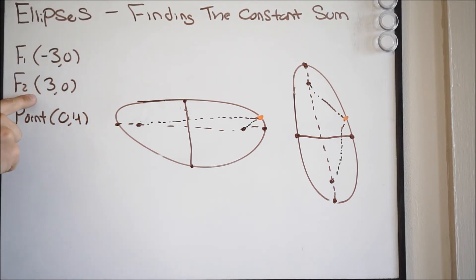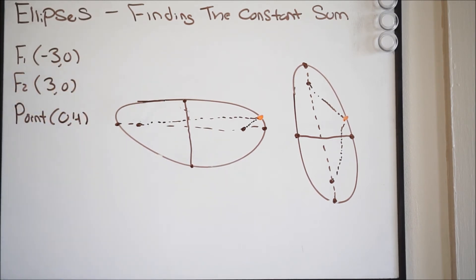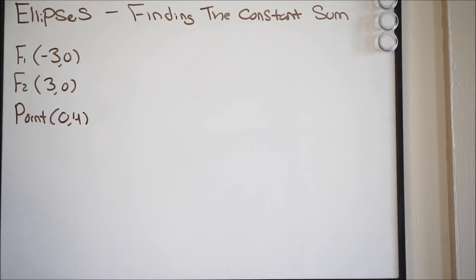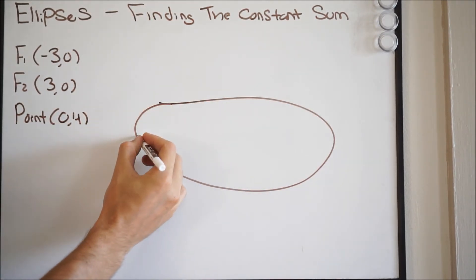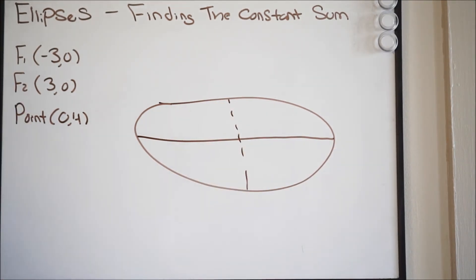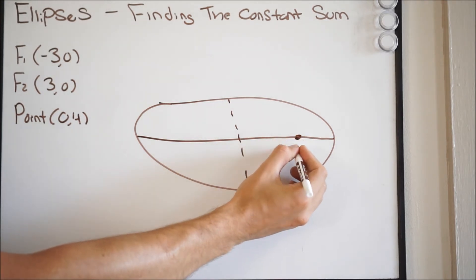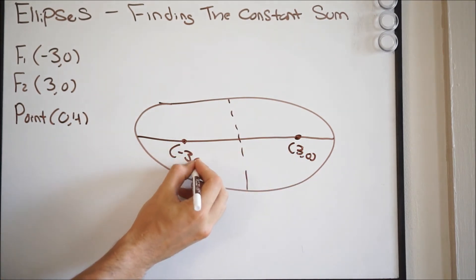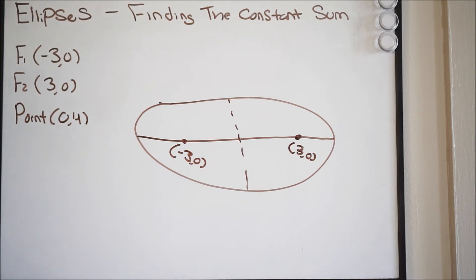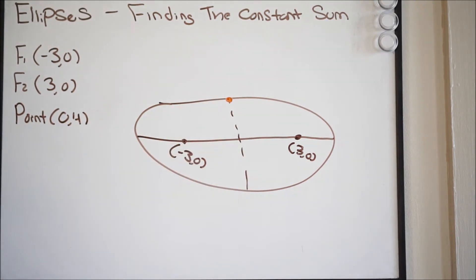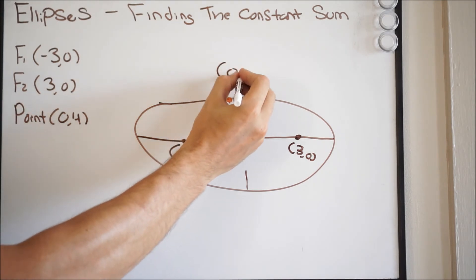Since the foci occur on the major axis, and both points have a y-coordinate of zero, we know they're on the x-axis — so this is a horizontal ellipse. We'll go ahead and draw that horizontal ellipse with the major and minor axes, place the foci at three comma zero and negative three comma zero, and then mark our given point at zero comma four on the ellipse.